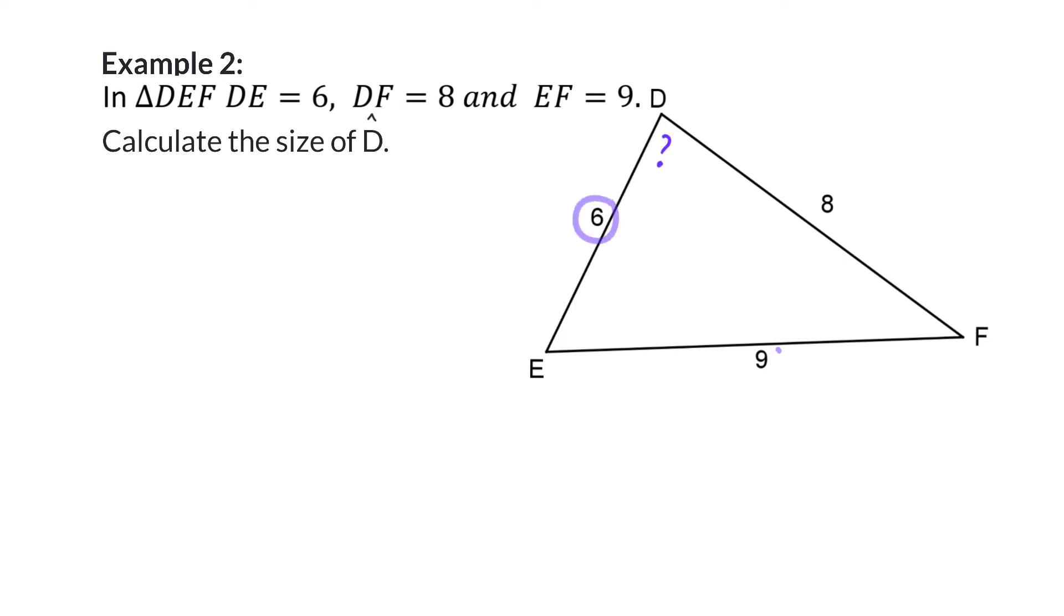Here we are given all three side lengths, but no information about any angles, and that means the sine rule will not be possible, so once again we'll be using the cos rule. When rewriting the cos rule to fit your triangle, you need to once again remember that the side on the left and the angle on the right will always form a pair, and in our case that will be pair D.